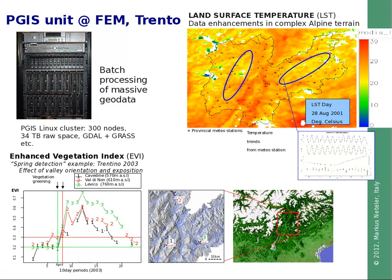Several products are delivered from this satellite system — about 40 different products are available online. One is the Enhanced Vegetation Index, which can be used to detect vegetation onset and autumn arrival, and to assess vegetation productivity. Vegetation is an important proxy for different risk assessments. Another topic is land surface temperature assessment; here an example from complex alpine terrain, where we have been developing an updated dataset. We do data processing on our GIS computer cluster, which currently has 300 nodes available.